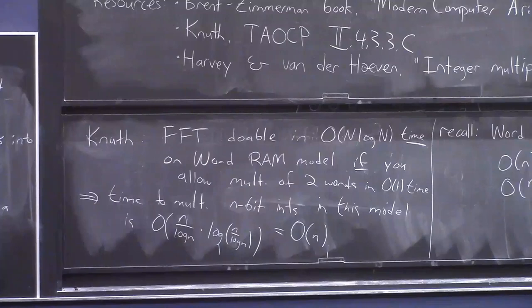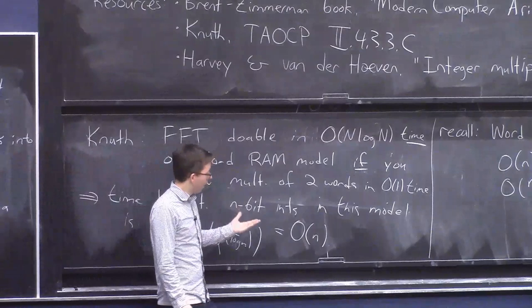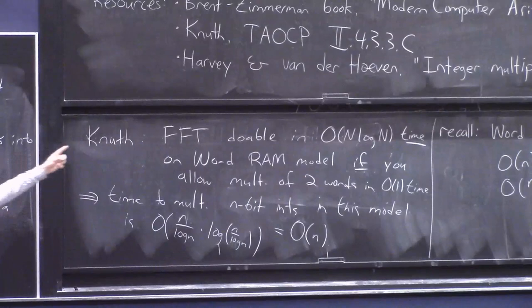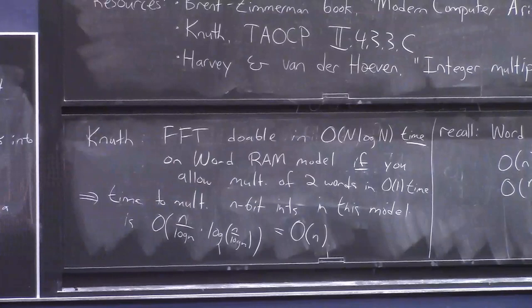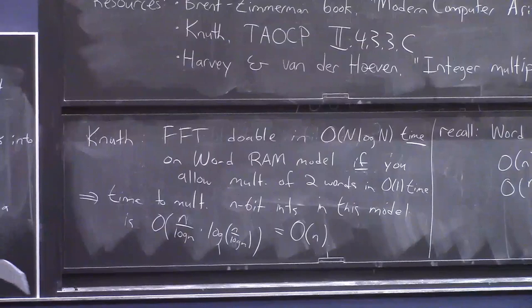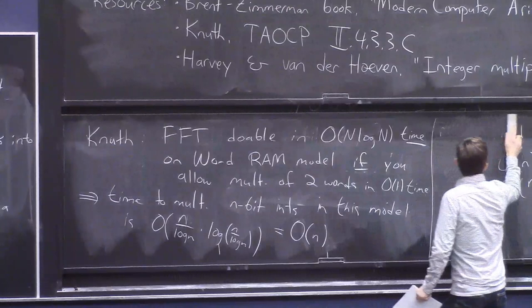And somehow this is like a lesser known fact. I don't know why. I think it's because people don't admit they're using the word RAM model or something. So you don't often see this fact cited, but it's true. It's like right there in the art of computer programming, like volume two, section 4.3.3.c from like the 70s. But yeah, I guess people were somehow, I don't know, worried about models or something.